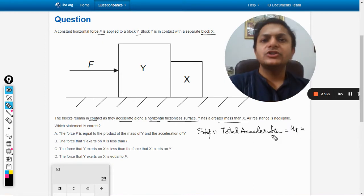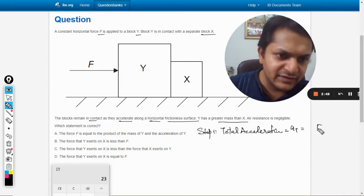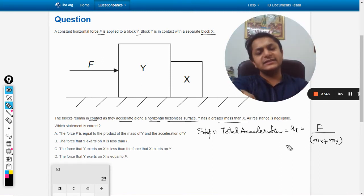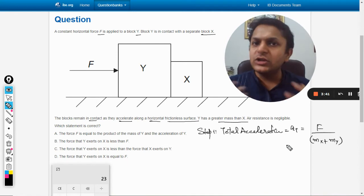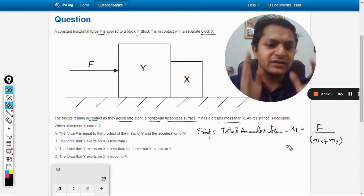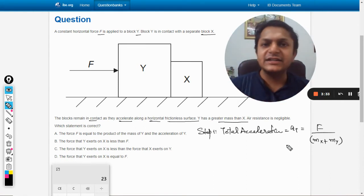Let us call it a_t. So total acceleration is total force divided by total mass that is in motion. So F divided by (m_x + m_y). This is the total acceleration. Both of the bodies are moving with the same acceleration and that acceleration is this, whatever be the force F.